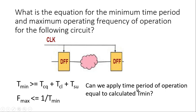The next question is: can we apply the time period of operation equal to the calculated T_minimum? The answer is no, we cannot. There are a few reasons. The very first and very important reason is there will always be clock jitter in the clock that will vary our time period. So if my time period varies and I am operating at the edges at T_minimum, my design will always fail.